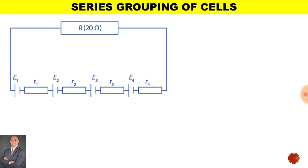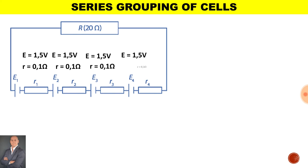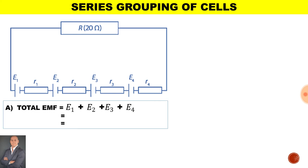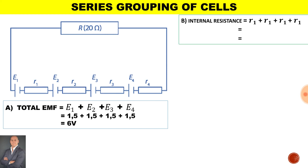Here we have an example of cells connected in series. The EMF for each cell is 1.5 volts and the internal resistance for each cell is 0.1 ohms. To calculate the total EMF we say E1 plus E2 plus E3 plus E4, which gives us a total EMF of 6 volts. To calculate the total internal resistance it will be 0.1 multiplied by 4 — the number of cells — giving us 0.4 ohms.